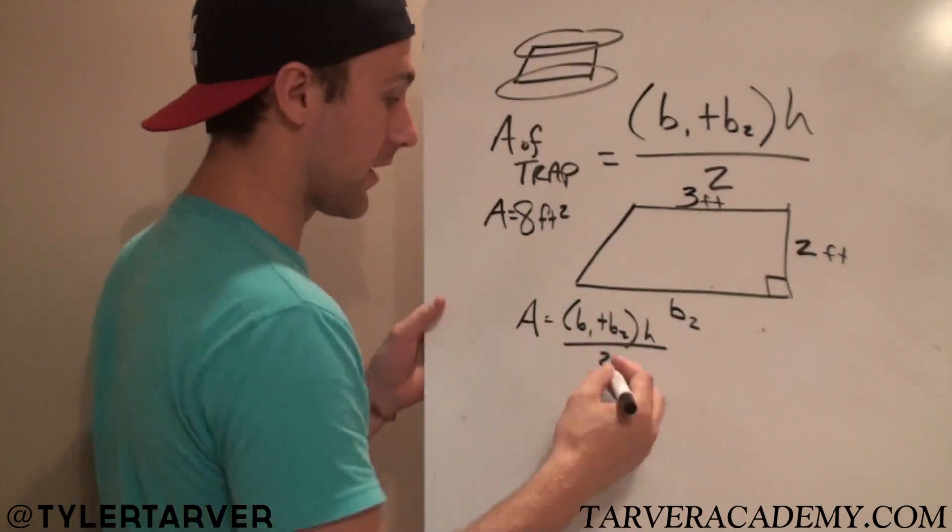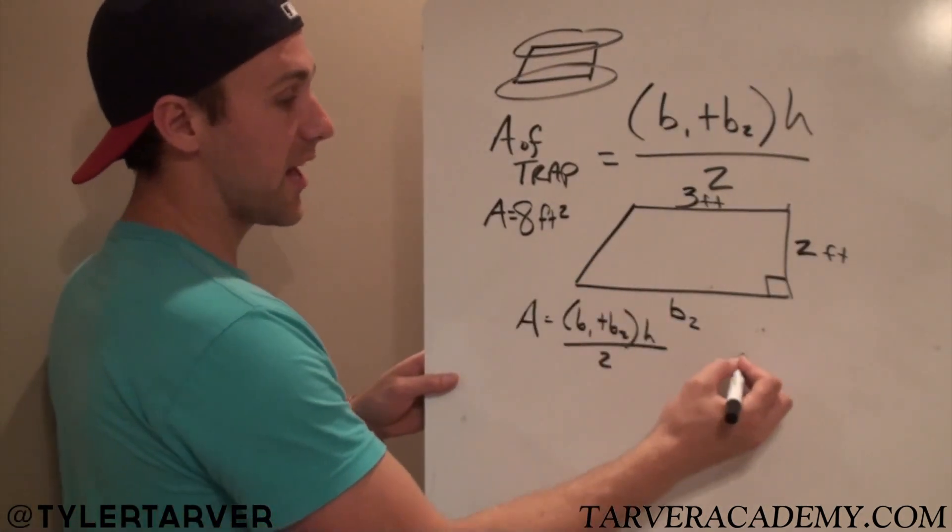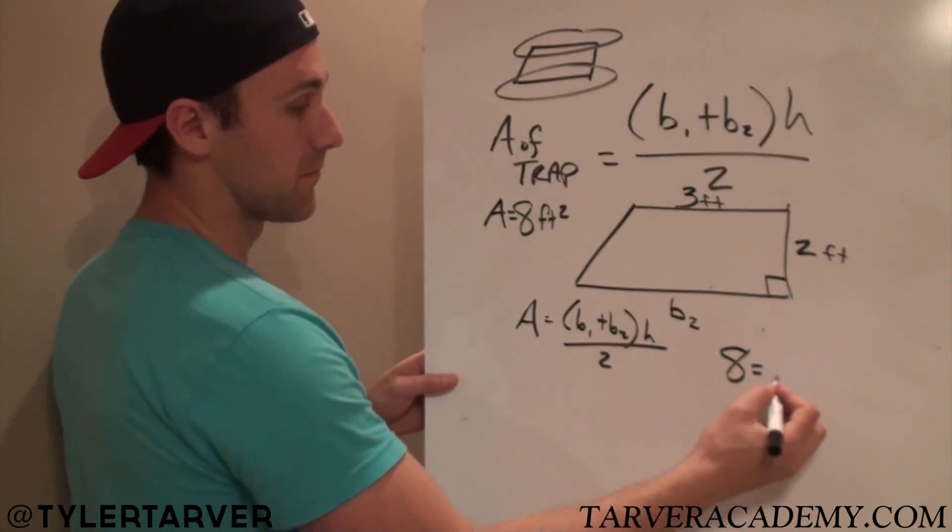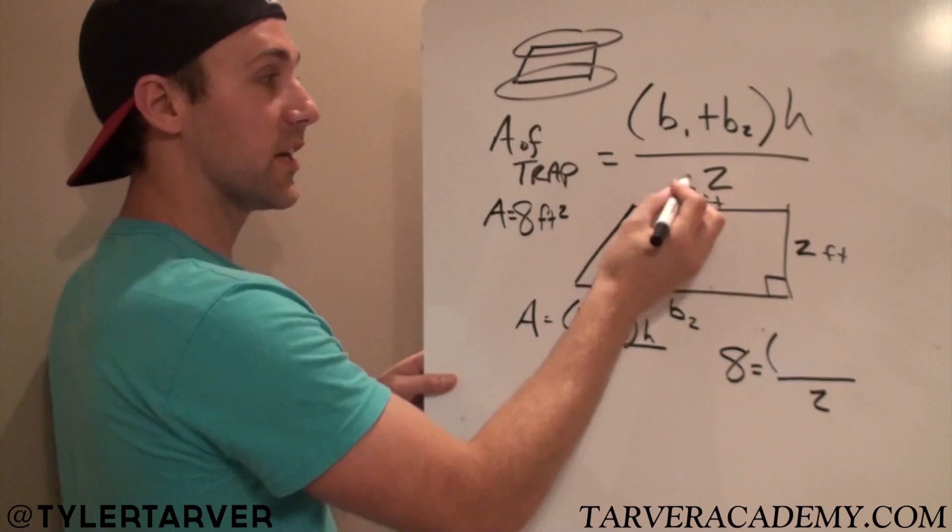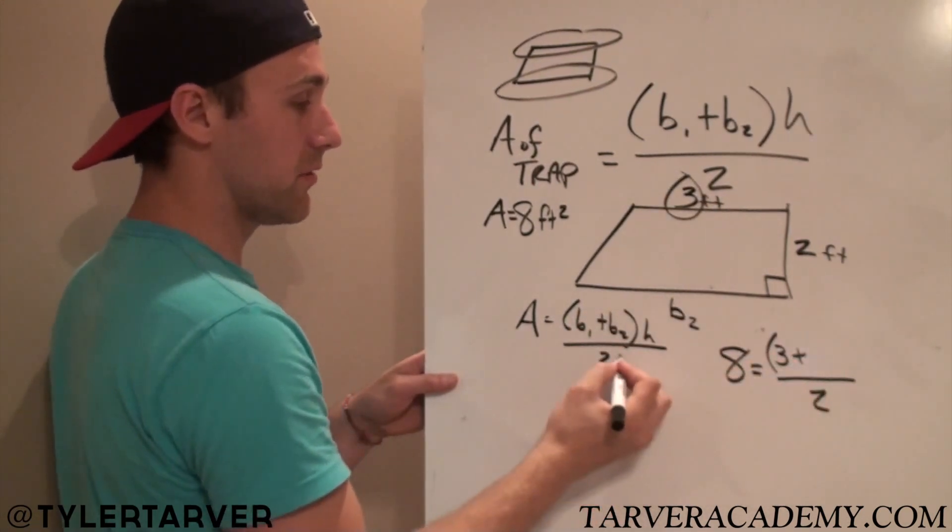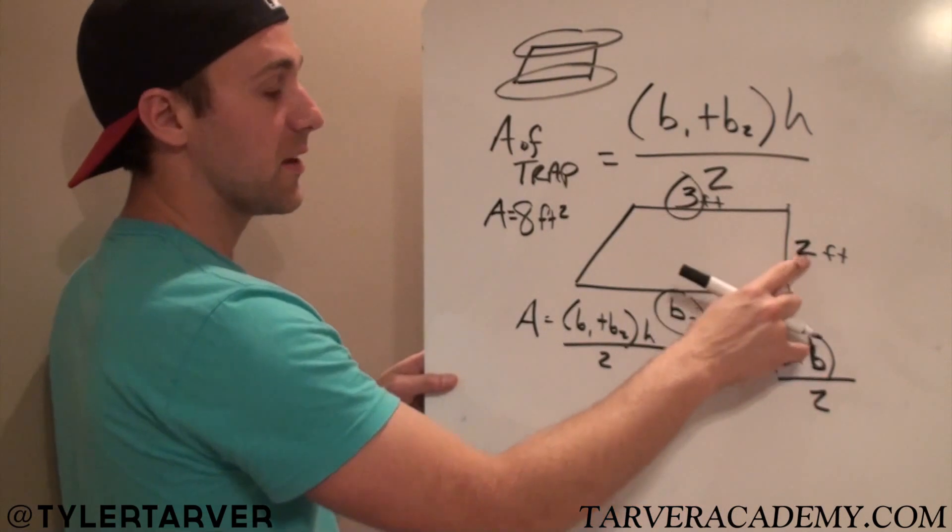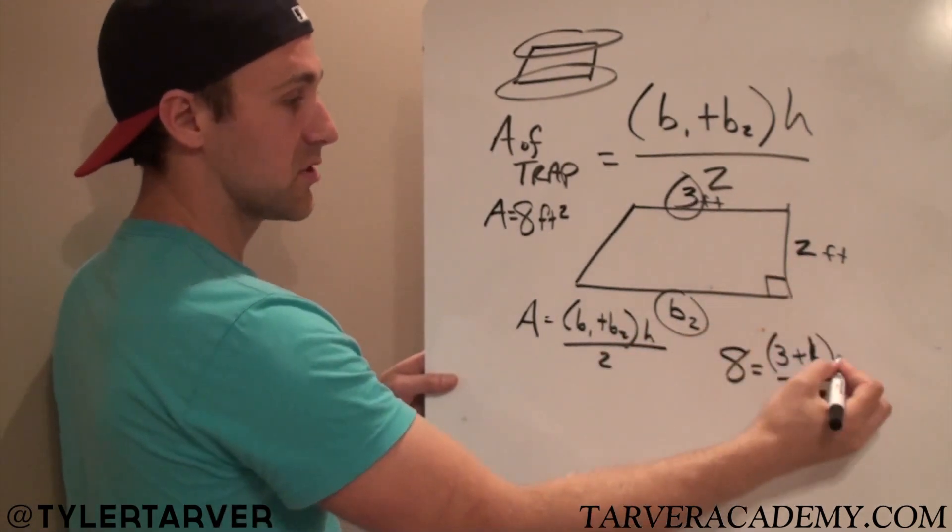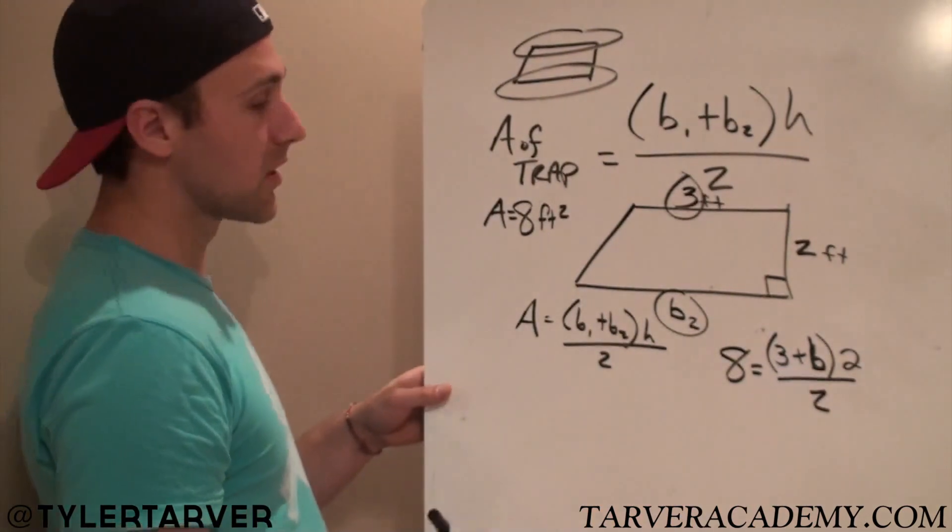8 equals B1 plus B2 times the height all divided by 2. We know 2, it's a number. We got it. Area, we also know that. 8 is our area. We know the 2. Do we know our B1? Well, yes, we do. It's 3. Plus, do we know our B2? No, we don't. So I'm just going to put B. That cool with y'all? Looks like a 6. It's not. It's a B. And then we also know our height, which is 2. I'll make my 2s different because that's how I do business.